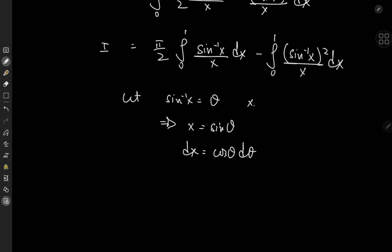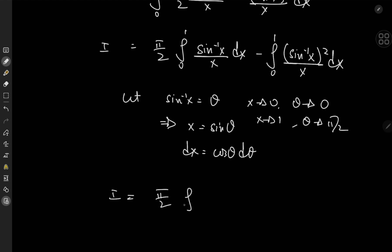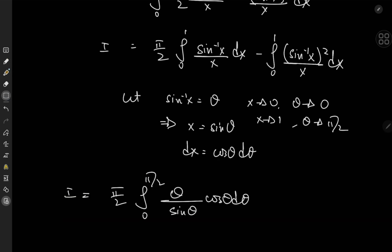As x approaches 0, θ approaches 0 as well, and as x approaches 1, θ approaches π/2. So I equals π/2 times the integral from 0 to π/2 of θ/sin(θ) times cos(θ) dθ, minus the integral from 0 to π/2 of θ²/sin(θ) times cos(θ) dθ.